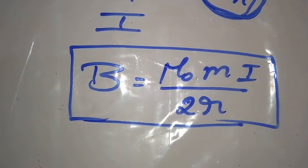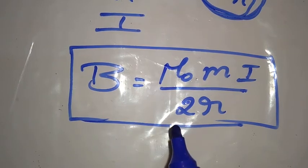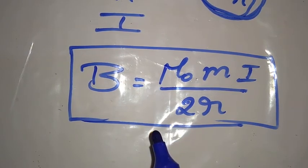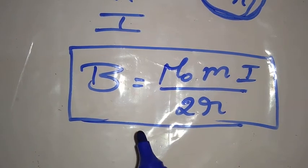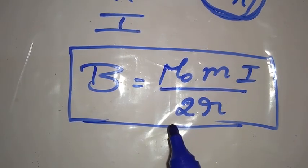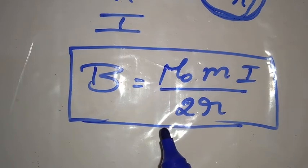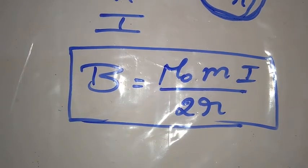Hence, finally we can conclude that the magnetic field at the center of a circular coil having m number of turns, of radius r, carrying a current of i ampere is given by B equals mu naught m i divided by 2r. Hence the correct answer is the first option.